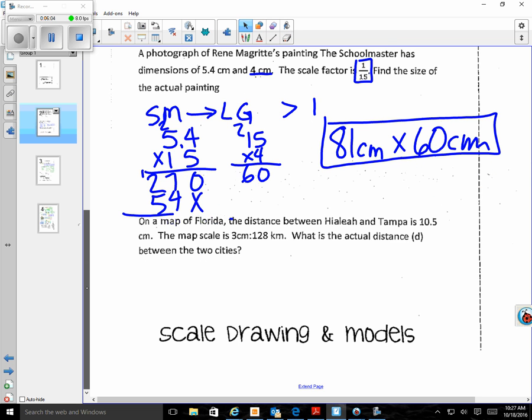Our next question says: On a map of Florida, the distance between Hialeah and Tampa is 10.5 centimeters. The scale is 3 centimeters is equivalent to 128 kilometers. What is the actual distance between the two cities?